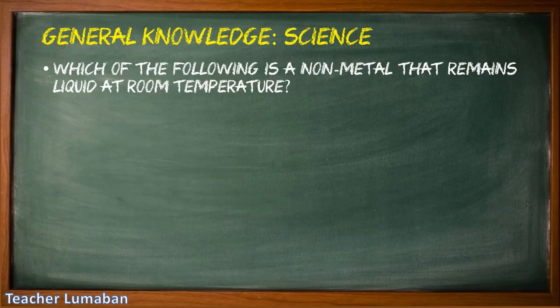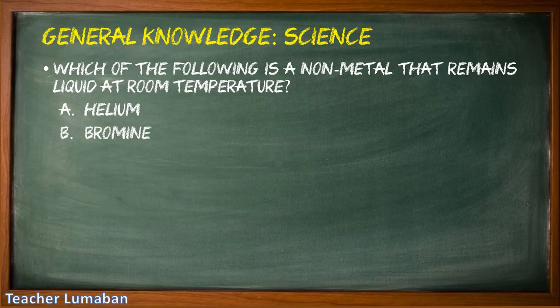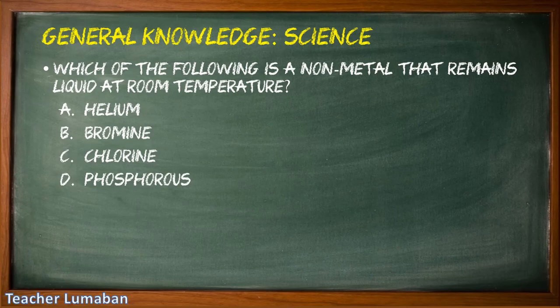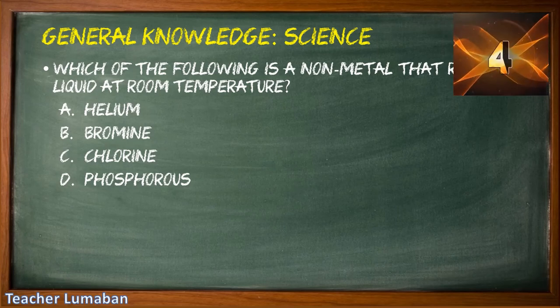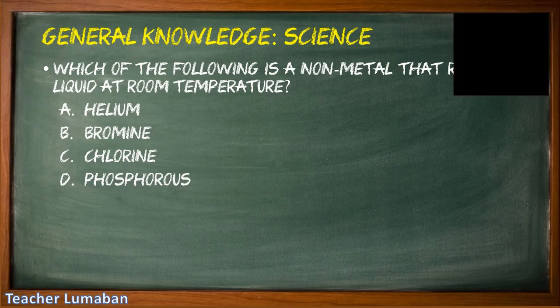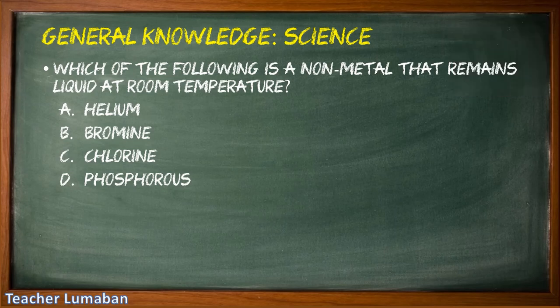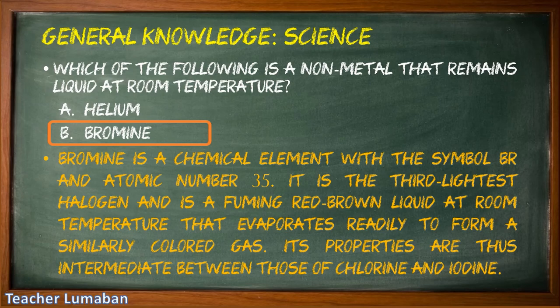Which of the following is a nonmetal that remains liquid at room temperature? The correct answer is Letter B: bromine. Bromine is a nonmetal that remains liquid at room temperature. It is a chemical element with the symbol Br and atomic number 35. It is the third lightest halogen and is a fuming red-brown liquid at room temperature that evaporates readily to form a similarly colored gas. Its properties are intermediate between those of chlorine and iodine.